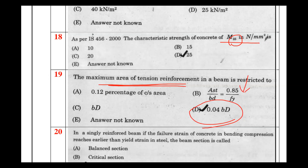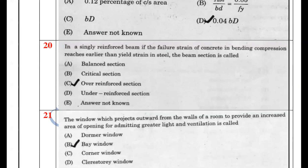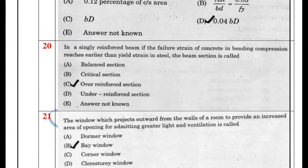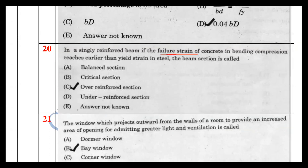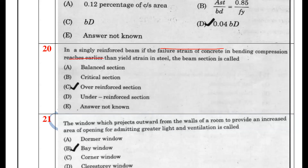For minimum tension reinforcement in a singly reinforced beam, there is a standard formula. Regarding failure modes: in an over-reinforced section, the concrete fails first; in an under-reinforced section, the steel fails first. We prefer the under-reinforced design as it gives warning before failure.